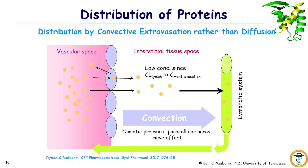In many tissues, the transfer into the interstitial space is restricted relative to the transfer from the interstitial space into the lymphatic system, as the lymphatic vessels have many more and larger pores. The influx into the interstitial space is much more restrictive, as indicated by the smaller arrows, compared to the outflux. In other words, the lymphatic clearance is much larger than the extravasation clearance, meaning concentrations in the interstitial space remain substantially lower than in the vascular space.